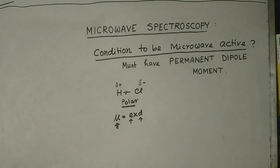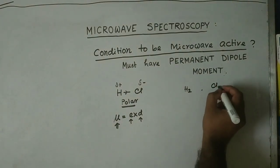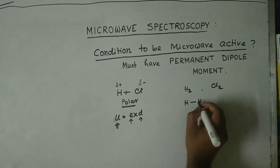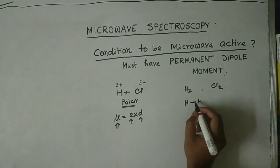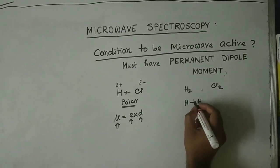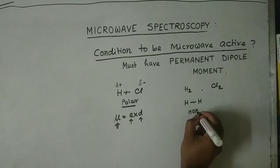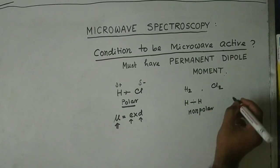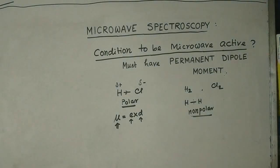In the case of homonuclear molecules — such as H₂ or Cl₂ — they have the same type of nuclei. The bonded electrons reside in the middle of the two atoms because both have the same attraction. Hence they are non-polar, with no dipole moment and no permanent moment. Therefore they cannot absorb microwave radiation and are microwave inactive.